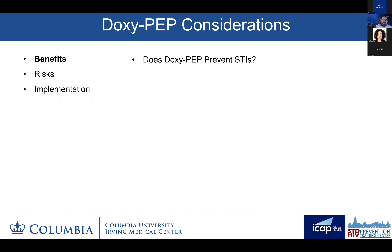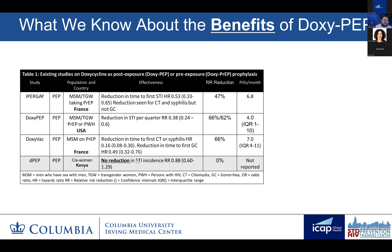The question of benefits starts with a pretty simple question: does doxypep work to prevent STIs? To answer this, we can look at the available data. We now have four completed randomized control trials. I want to highlight first that all four randomized control trials were post-exposure prophylaxis. While pre-exposure prophylaxis trials are ongoing and there is one older small trial, there is not enough data to recommend doxyprep yet. Everything we'll talk about today is doxy post-exposure prophylaxis. The first three trials only included men who have sex with men and transgender women taking HIV PrEP. The doxypep trial included men who have sex with men and transgender women living with HIV. Only the last study, the DPEP study completed in Kenya, included cisgender females.